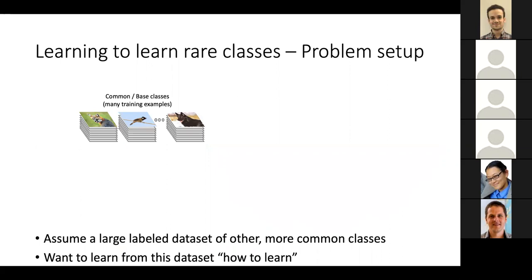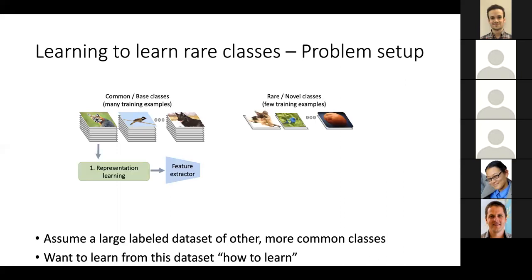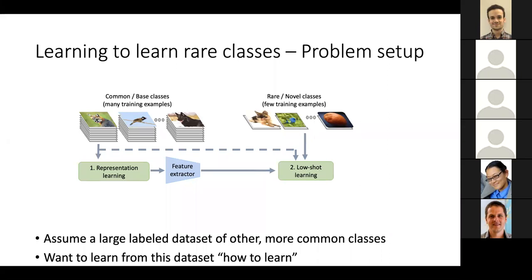To concretize the problem setup: our system first gets a set of common classes, which we call base classes, which have lots of training examples. On these base classes, the recognition system can learn a feature representation and any other modules it needs. Then it gets deployed and encounters some novel classes, which have very few training examples. The job of the recognition system is to use its prior experience and feature representations to learn a good classifier for the novel classes — either only for the novel classes, or distinguishing between both novel and base classes.